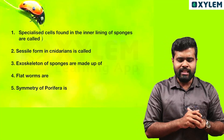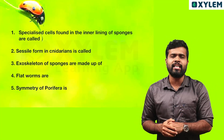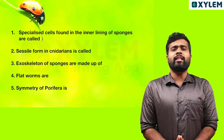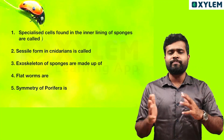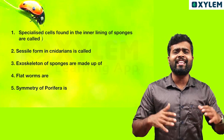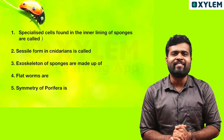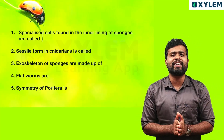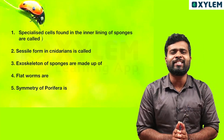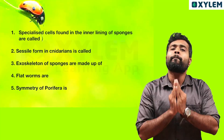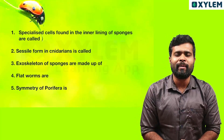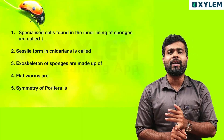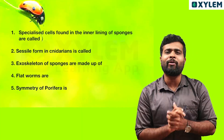Next question: the sessile form in Cnidarians is called what? The sessile form in Cnidarians — what is sessile? The name is Polyp. What is the name of the Cnidarian polyp? It is called Polyp. Hydra is an example, and Sea Anemone is another example.